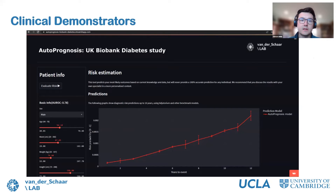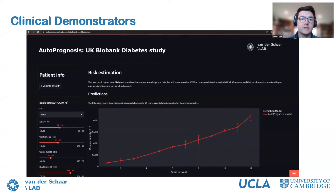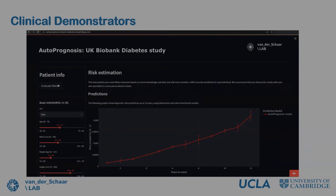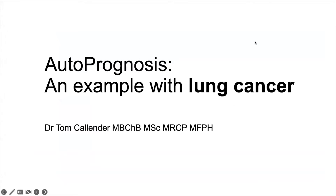One of the nice things about AutoPrognosis 2 is that it can automatically produce clinical demonstrators without requiring any additional front-end website code. This is an example from our diabetes study on UK Biobank, where a clinician can enter features for a particular patient or debug the model by testing how the predicted risk changes as individual features change. With that, I'd now like to introduce and pass over to Dr. Thomas Callender.